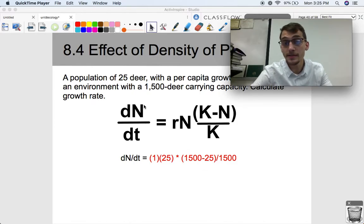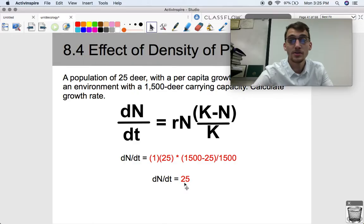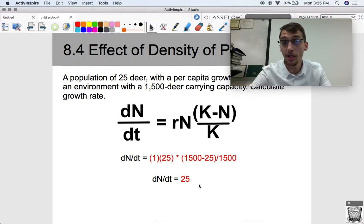So it's going to be 25, because that's 25 times 1, times 1,500 minus 25 divided by 1,500. So if you plug all this into your calculator, this is what you'll eventually get. The logistic growth rate is going to be 25.